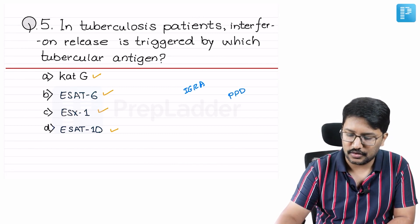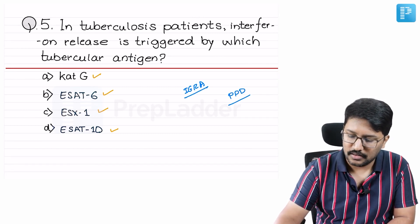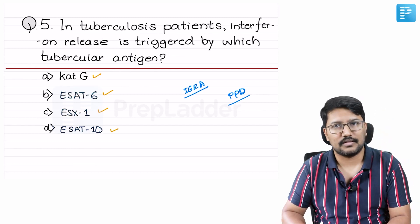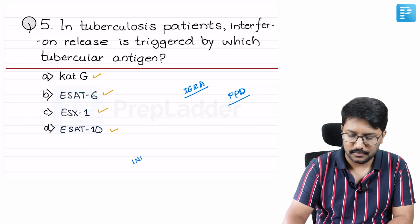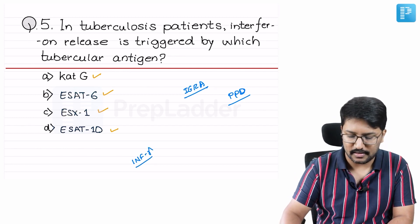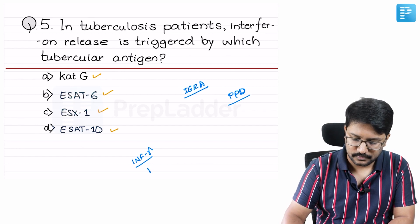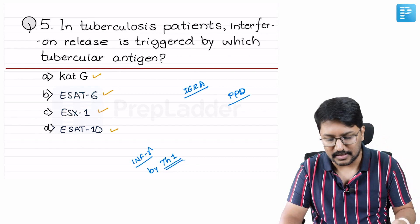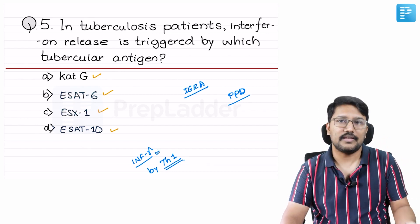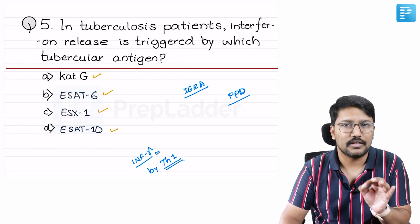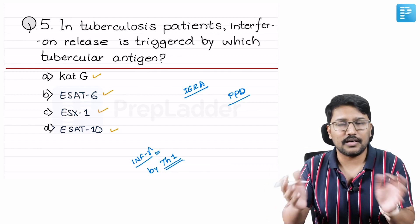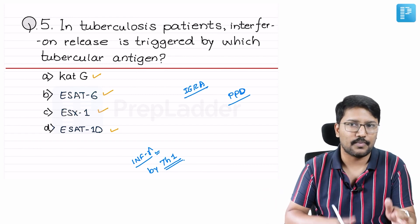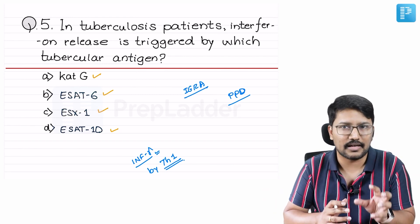Both of them are actually trying to assess the interferon release by TH1 cells. These methods are trying to assess interferon gamma release by TH1 cells. TH1 cells will release interferon gamma on specifically challenging with the tubercular antigens. This TH1 cell immune activation has already occurred if the patient was exposed to tubercular bacilli in the past — the TH1 cells are already activated.